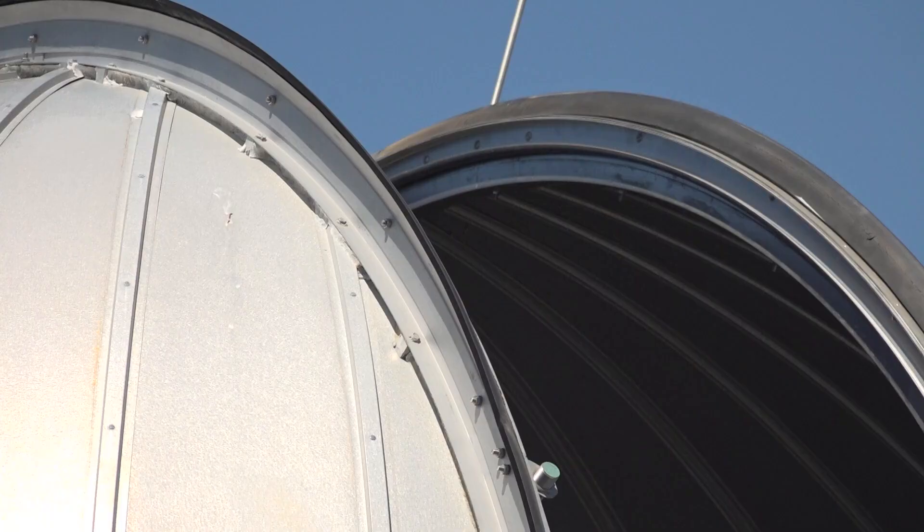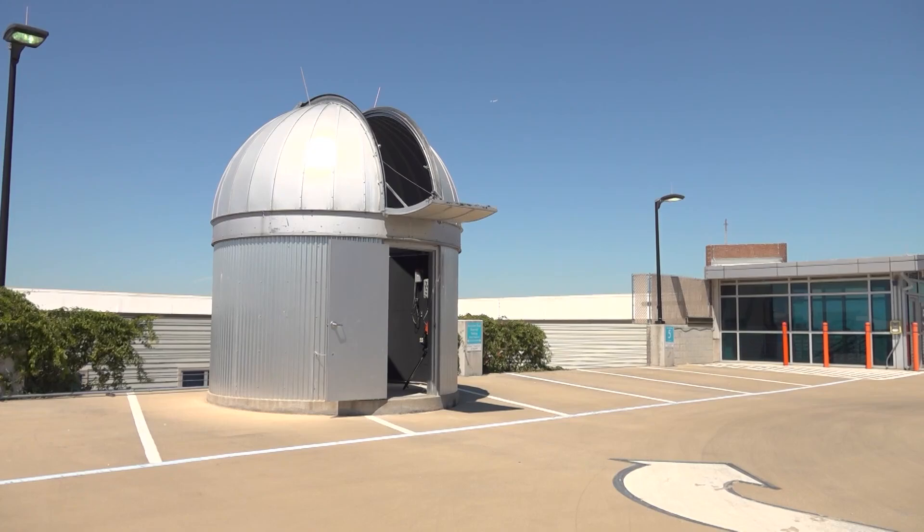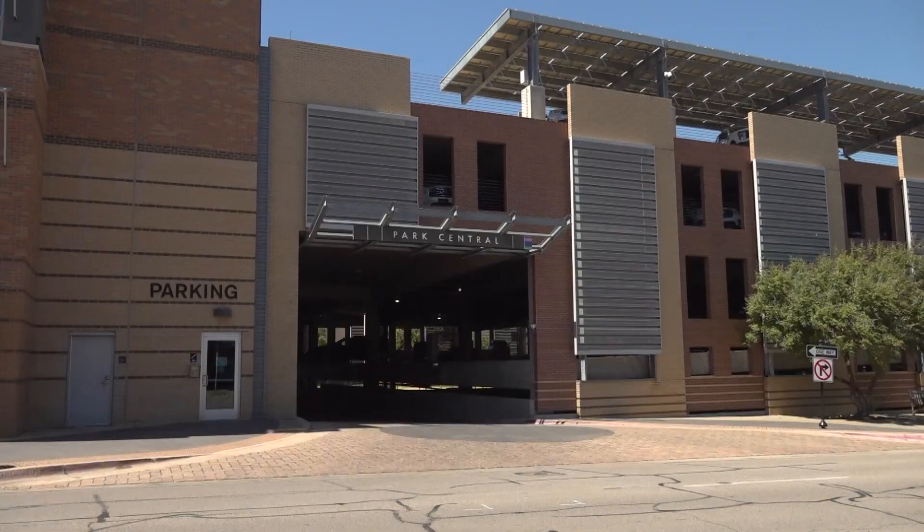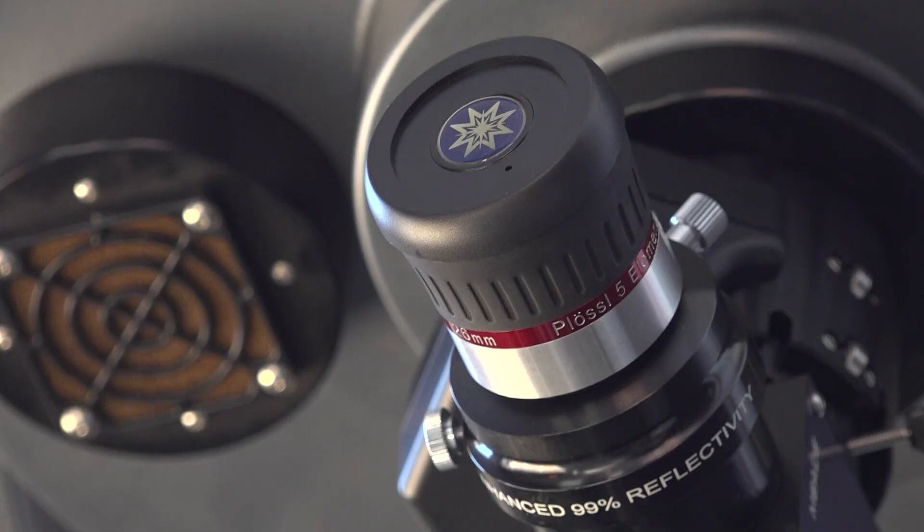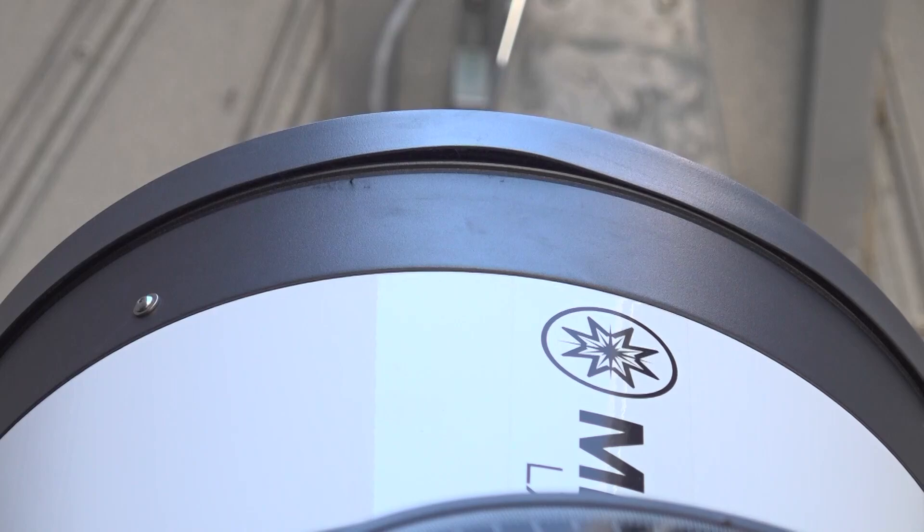In partnership with NASA, the UTA Observatory, which opened last year on top of the Park Central Parking Garage, is giving you the chance to see the moon like you've never seen it in order to spark curiosity.